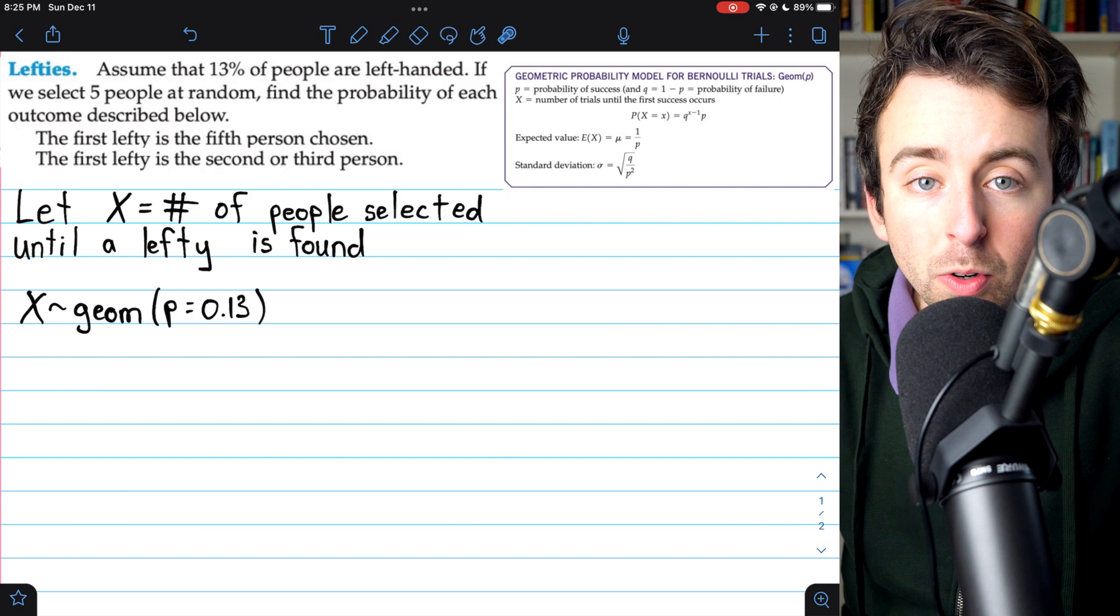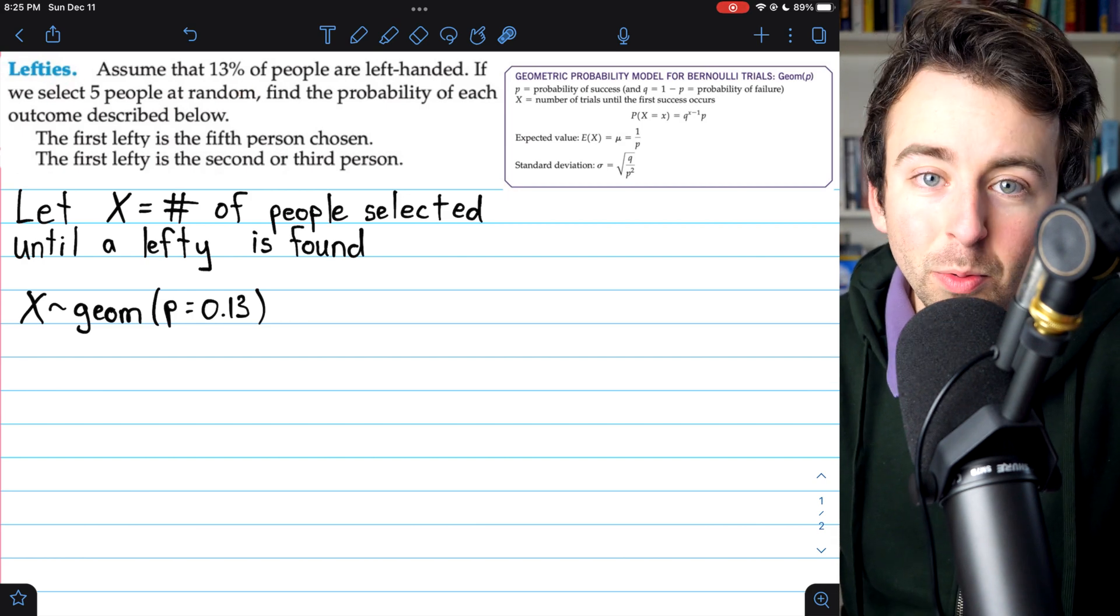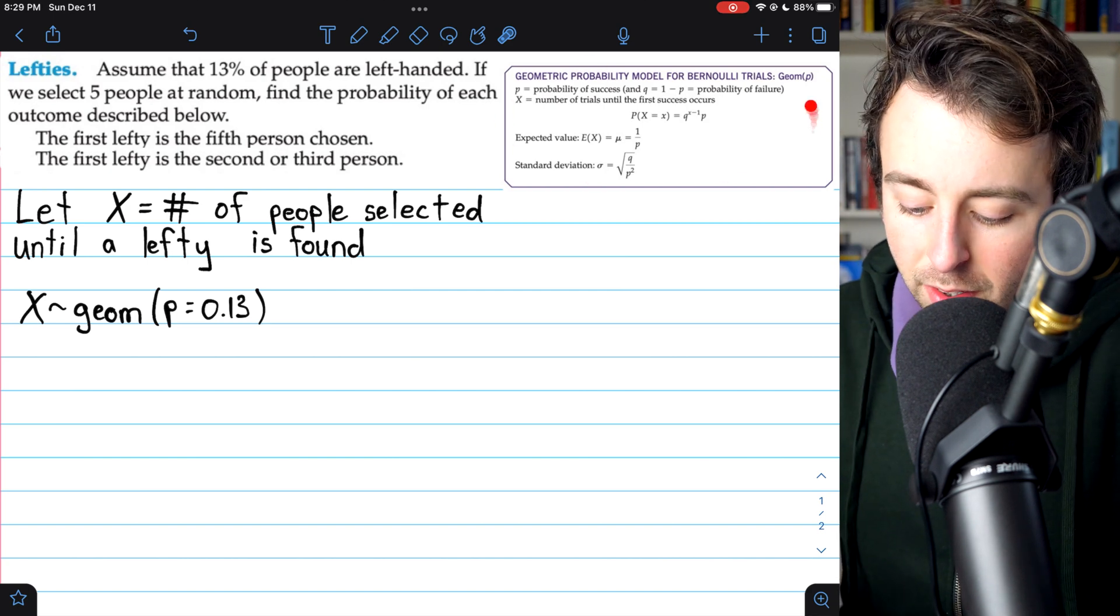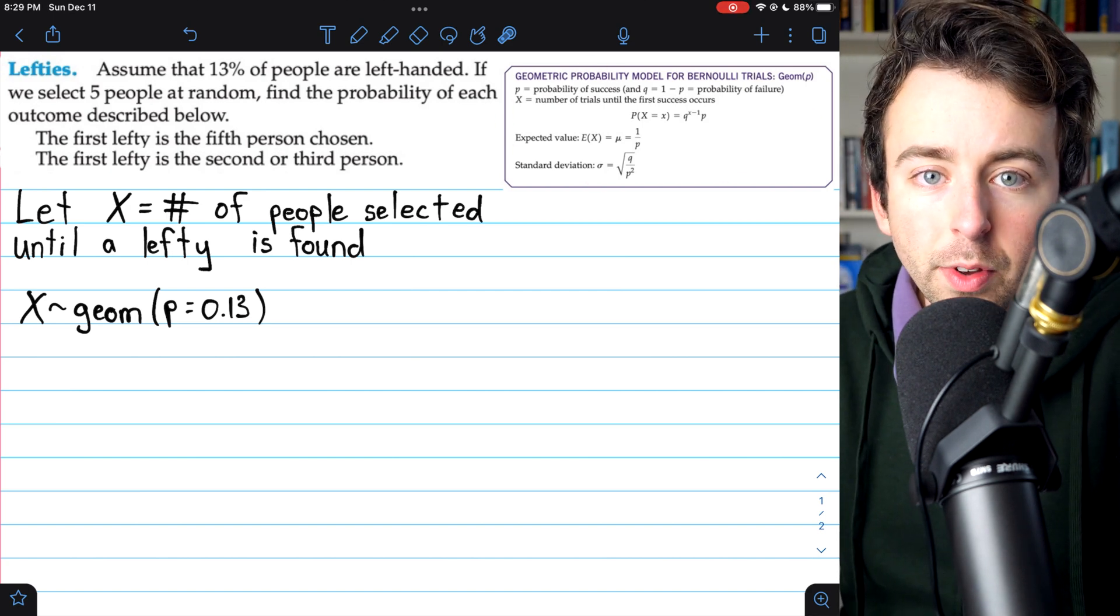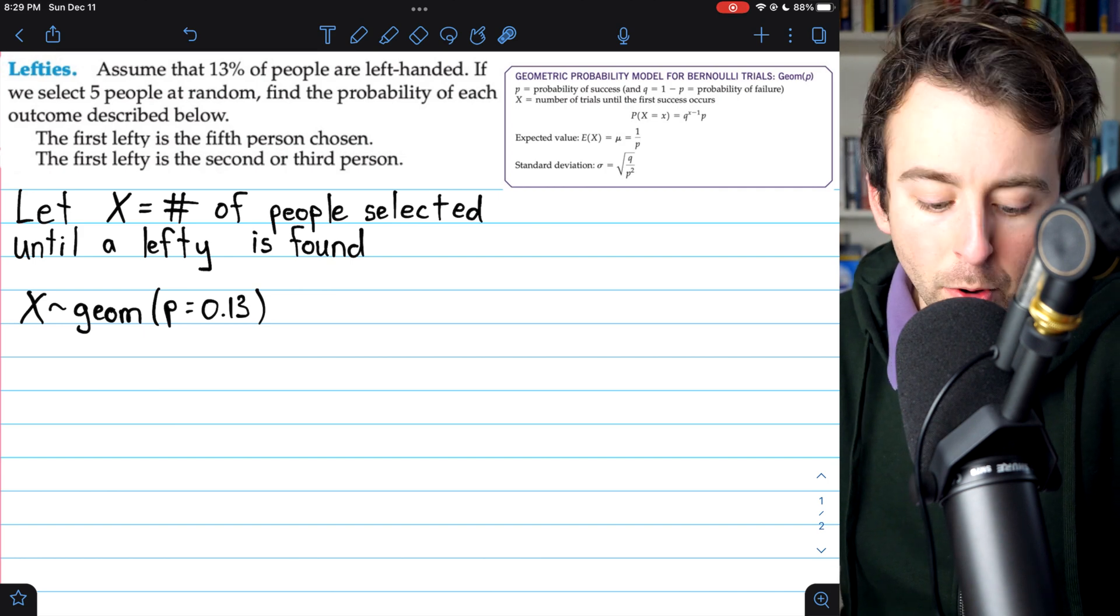For these geometric distribution problems, the fact that we're selecting five people at random doesn't really have any bearing on our calculations. This box here gives us a quick recap of the essential facts for geometric models and indeed a geometric model is appropriate here.